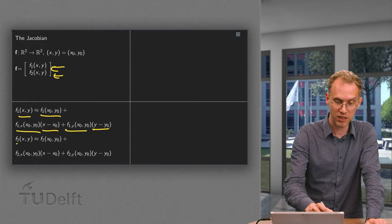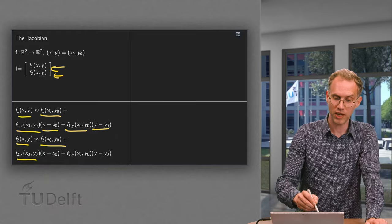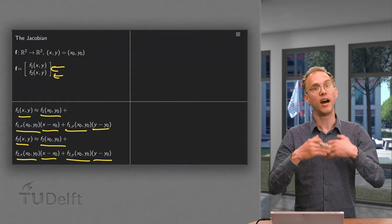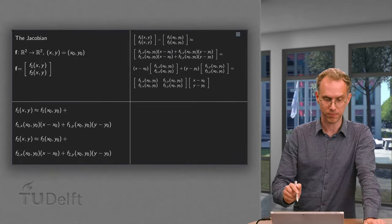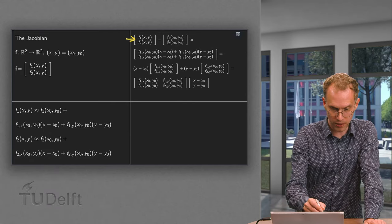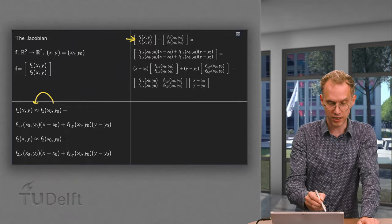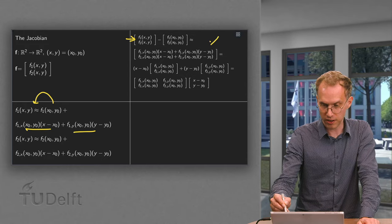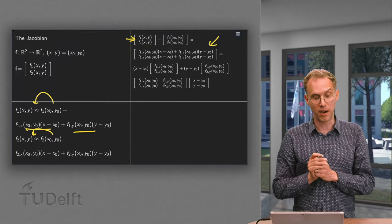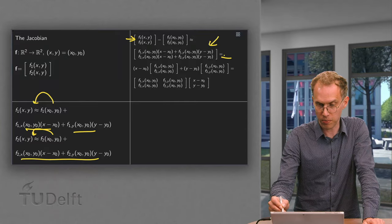We do the same for the second function. f₂ is the function at the point (x₀, y₀) plus the partial derivative with respect to x times (x minus x₀) plus the partial derivative with respect to y times (y minus y₀). We then put them back in a vector. Bringing the values at the point to the other side, we have f₁ minus f₁ at the point and f₂ minus f₂ at the point, each approximately equal to their respective two-term expressions.